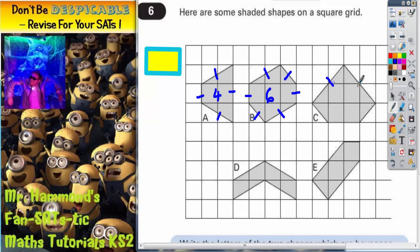C has got one, two, three, four along the bottom there, and then five.